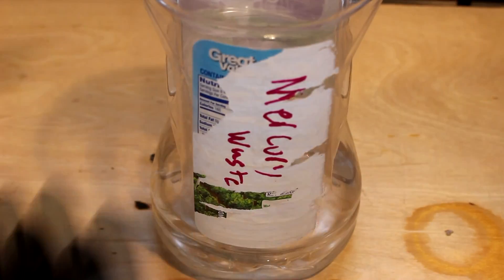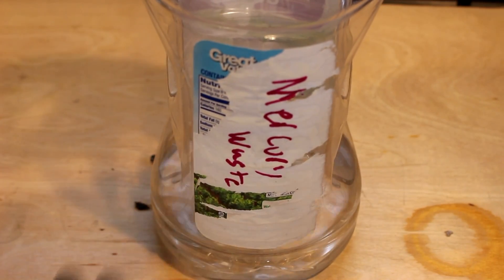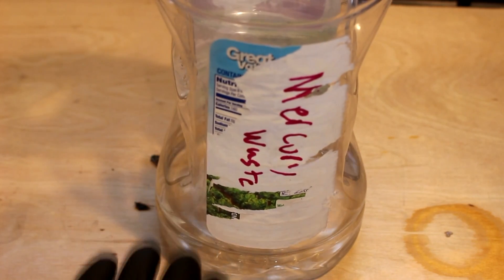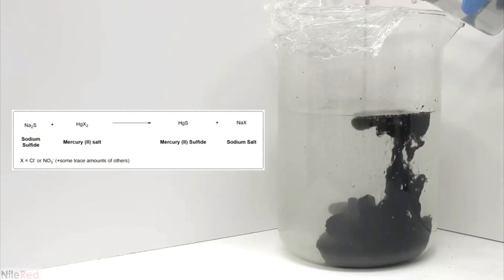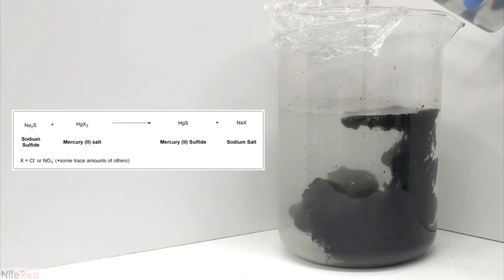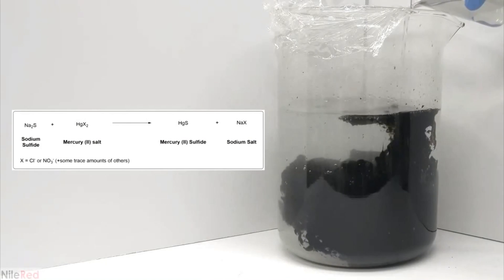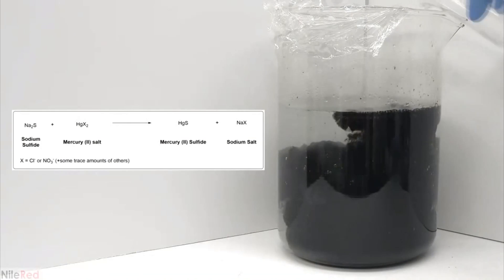This video is actually inspired by a video that my friend Niall Red did when he was doing something very similar. He was treating his mercury waste into a form that was less toxic. He converted it into mercury sulfide which is fine because mercury sulfide is a naturally occurring mineral. It's incredibly insoluble in water and not very toxic in that form.